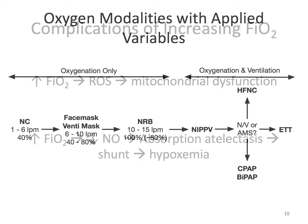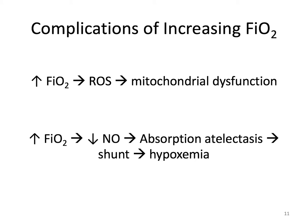With FiO2, there are some complications associated with raising it. An increase in FiO2 results in the formation of reactive oxygen species, which can lead to mitochondrial dysfunction and rupture of cells. An increase in FiO2 can also result in a decrease in nitric oxide in the lungs. Because nitric oxide is one of the components maintaining open alveoli, alveoli can collapse, resulting in absorption atelectasis, which forms a shunt and may contribute to hypoxemia.